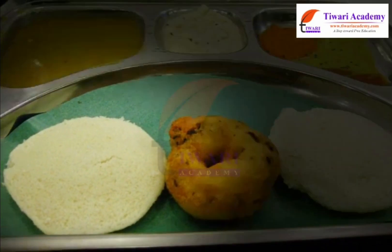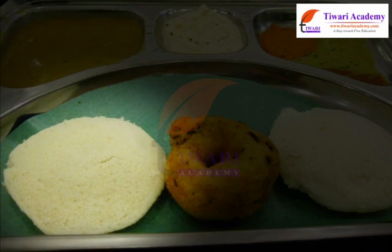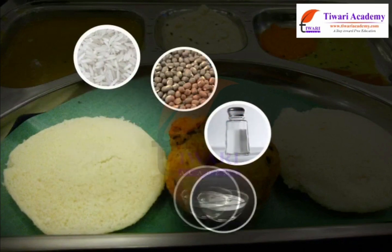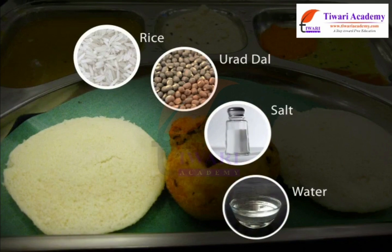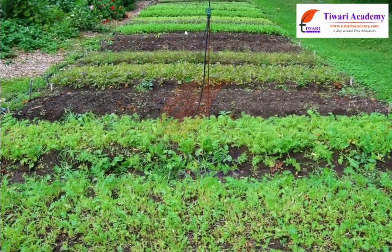Idli is made up of rice, urad dal, salt and water. We get rice and urad dal from plants.